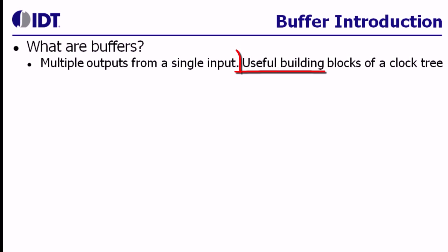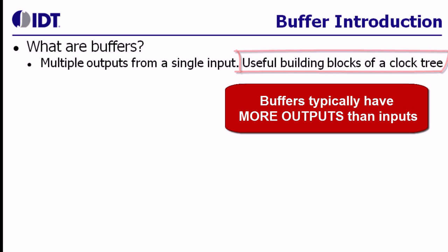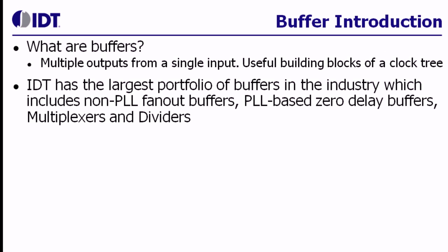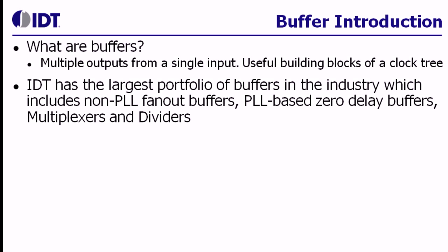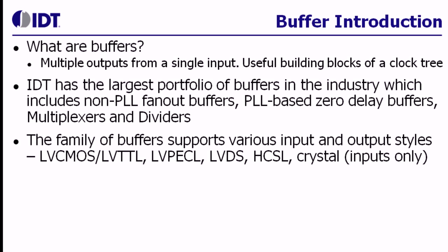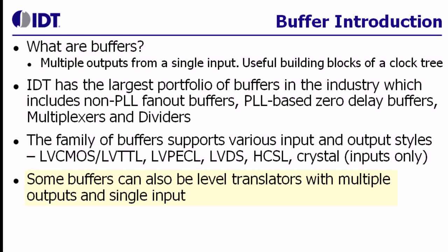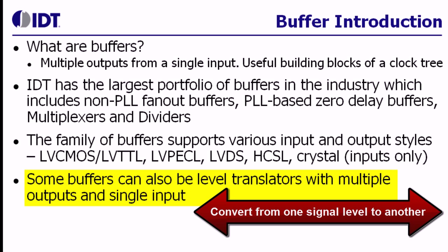Buffers are one of the most important building blocks of a clock tree. Typically, they have one or two inputs and multiple outputs. IDT has a very large portfolio of buffers that includes non-PLL buffers, PLL-based zero-delay buffers, buffers with multiplexers, and dividers. IDT has about 450 such devices that support various versions of inputs and output styles. In many cases, buffers can also be used as level translators to convert one signal level to another.